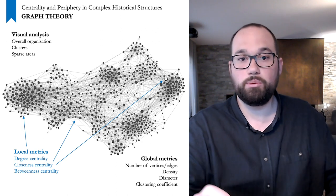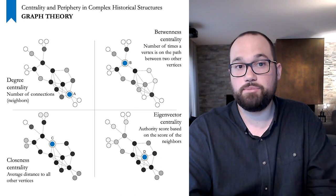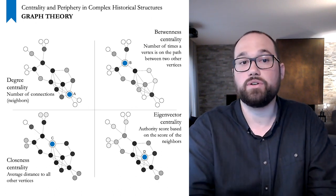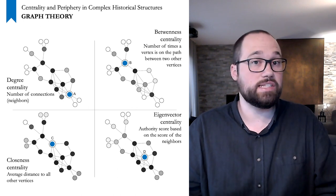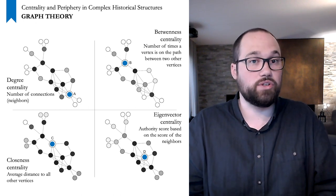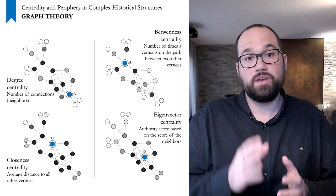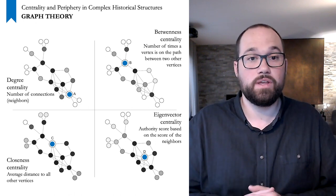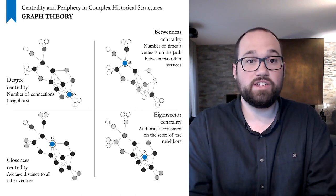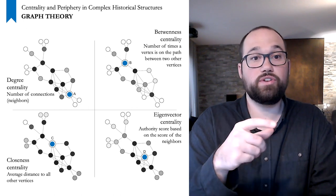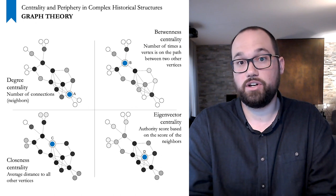We will now look at some centrality metrics useful in our case study, using a very simple duplicated network where the darker a point, the higher the score. At the top left, degree centrality simply counts the number of connections of each vertex — in a letter network, this is the number of people who correspond with a selected individual. Here, individual A reaches the highest score with seven connections. In this conception of centrality, an individual is central if they have many connections.